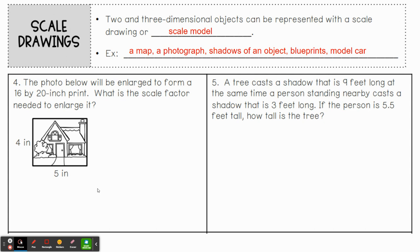A photograph is usually a scale — sometimes it looks smaller on your phone, or larger if you print and hang it on your wall. Shadows of an object: we did an activity where we measured the height of a student and their shadow, then measured the shadow of large items in the parking lot to figure out their height. Other examples include blueprints for a house, model cars, and Legos — especially the detailed scale models of cars and buildings.